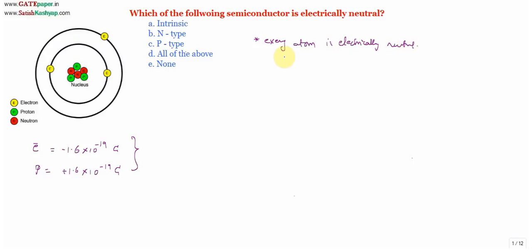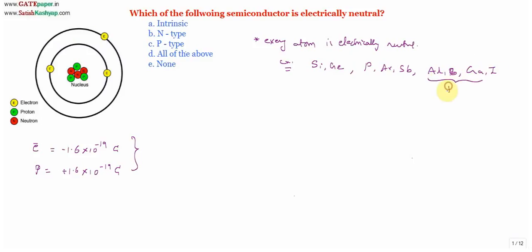Since every atom is electrically neutral, consider some examples. Silicon and germanium are examples of semiconductors. Phosphorus, arsenic, and antimony are examples of pentavalent impurities. Aluminum, boron, gallium, and indium are examples of trivalent impurities. Whatever they are, they are all treated as atoms, and so all are electrically neutral.